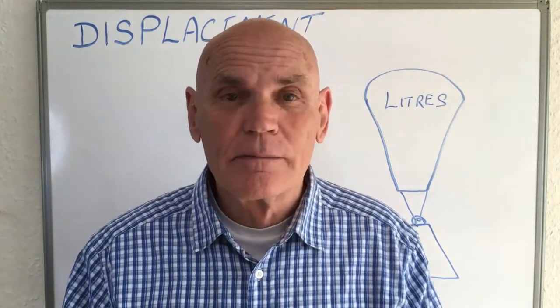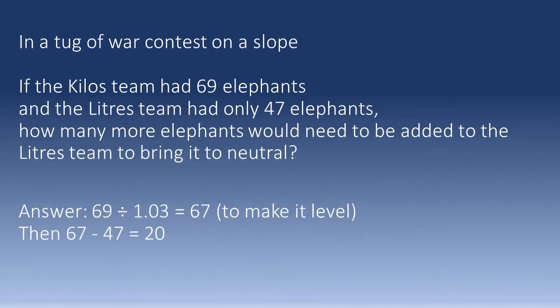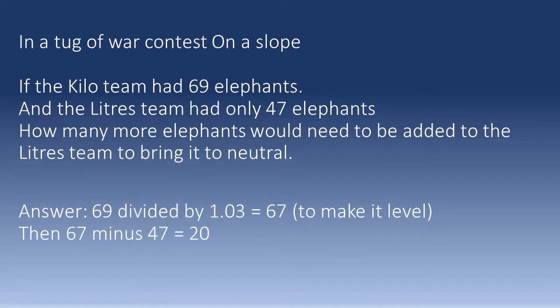So we can now have another question: in a tug-of-war contest on a slope, if the kilo team had 69 elephants and the liters team only had 47 elephants, how many more elephants would need to be added to the liters team to bring it to neutral? The answer: 69 divided by 1.03 equals 67. Then 67 minus 47 equals 20.